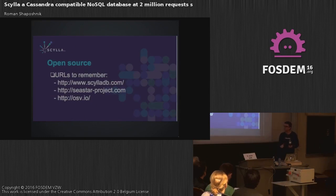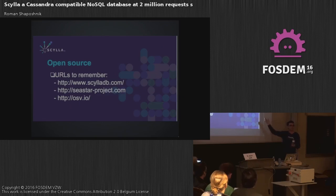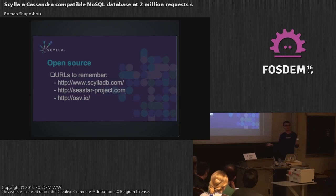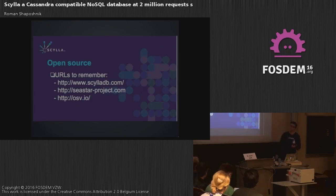So with that, check out those URLs. All three of them, seriously. CLDB — just use it. The CSTAR project — think about what other exciting, highly parallel applications you can write on it. And finally, OSV — it's a very cool way to run this stuff. Thank you.